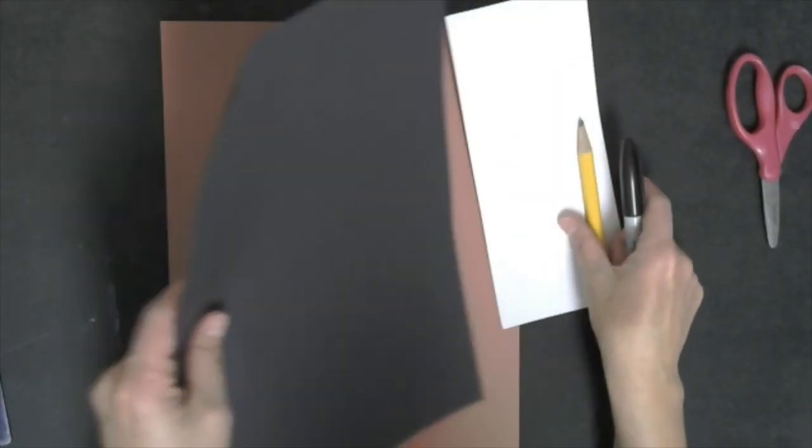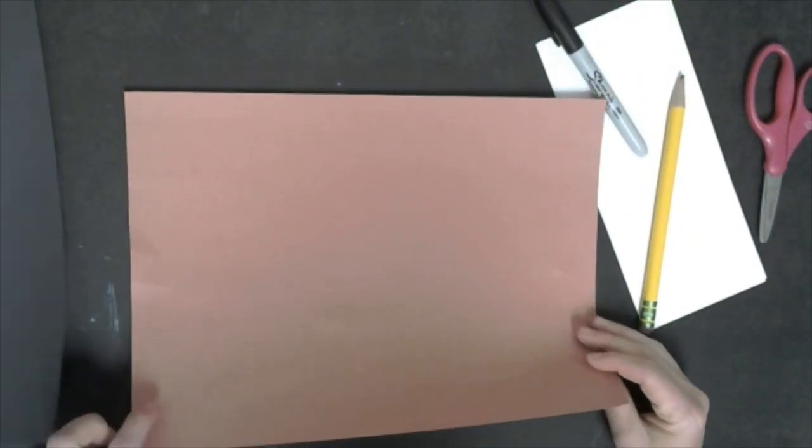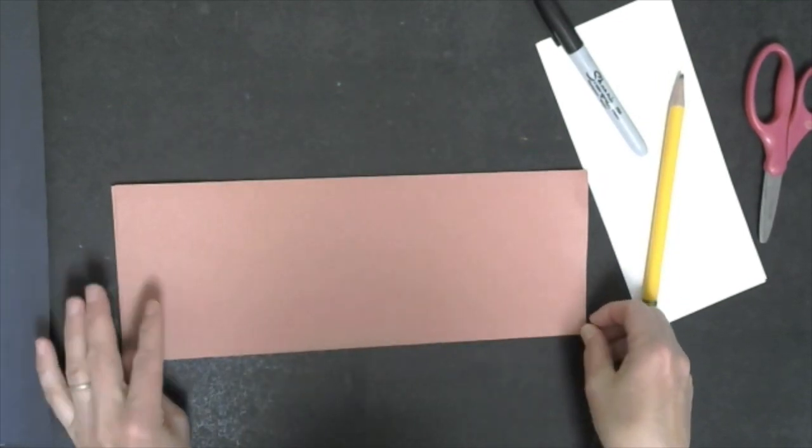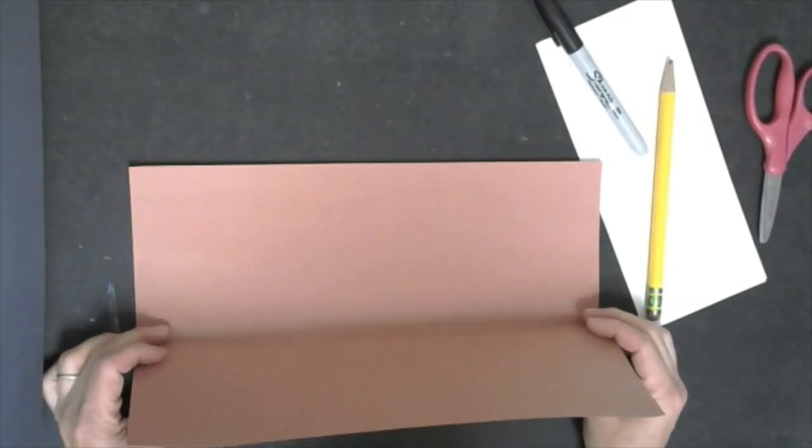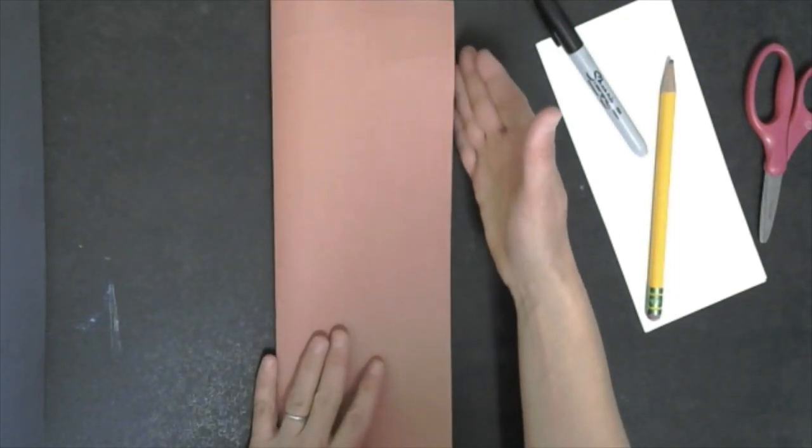You're going to start out by using your brown sheet of construction paper and you want to turn it lengthwise so that it's longer and you're going to fold it in half. And you're going to open it up so it's similar to a book.